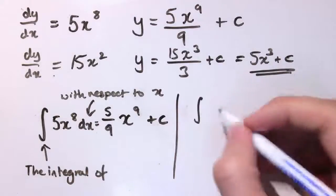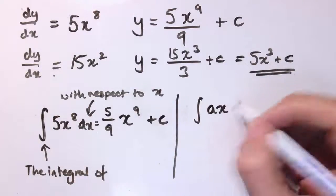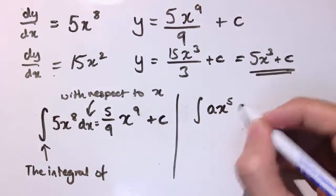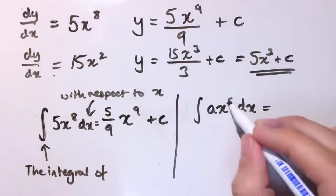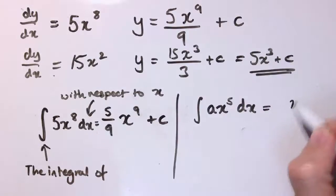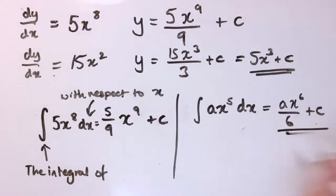So, for example, if I did the integral of a times x⁵ dx, where a is a constant. And I can see a is being treated as a constant here because this is dx. So, x is the variable. I would increase the power of x by 1 to get x⁶. I've got a constant of a and I divide by the new power. So, I get ax⁶ over 6 plus c.